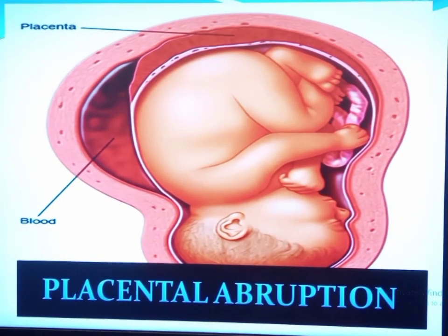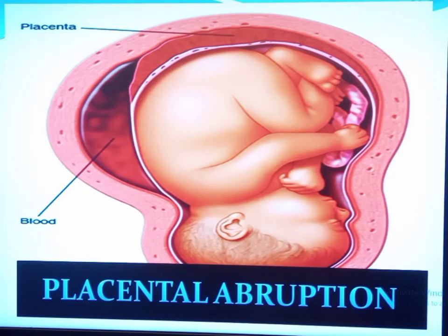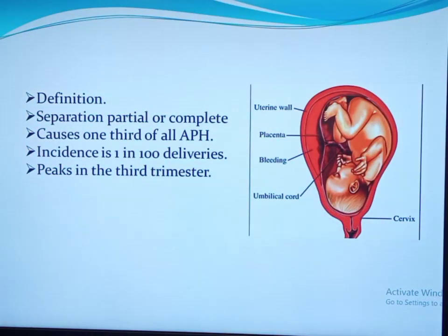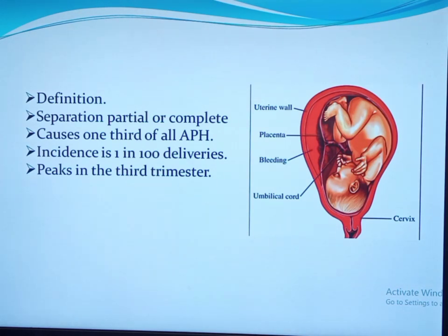Today we will discuss one of the commonest causes of antepartum hemorrhage called placental abruption, also known as abruption placenta. It is defined as a premature separation of a normally implanted placenta from the uterine wall prior to delivery of the fetus. In this definition, 'normally implanted placenta' means the placenta implanted in the wall of the uterine fundus.